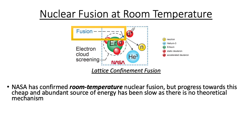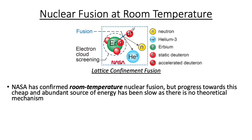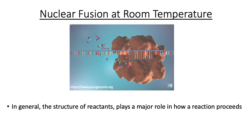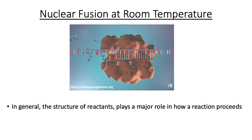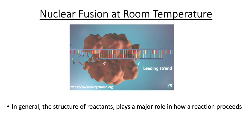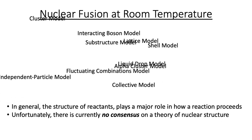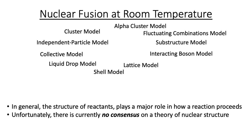A central challenge is that we don't currently know the deeper structure of the atomic nucleus. In this NASA illustration, for example, the elements are all simply depicted as colored spheres — the deeper structures are unknown. And yet, the structure of reactants plays a major role in determining how a reaction proceeds. Imagine attempting genetic replication without knowing the structure of DNA. Unfortunately, there is currently no consensus for nuclear structure among the myriad models of the atomic nucleus, which generally avoid the smaller nuclei of interest in nuclear fusion.